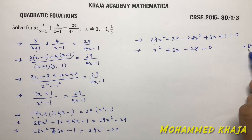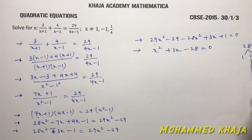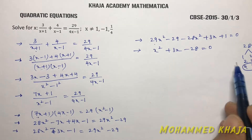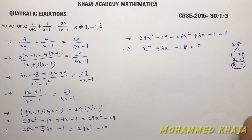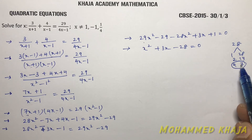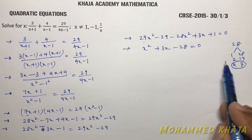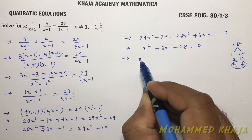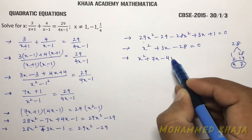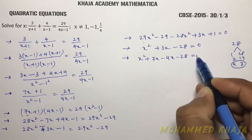To factor x² + 3x - 28 = 0, find factors of 28: 1×28, 2×14, 4×7. The pair 4 and 7 works because 7 - 4 = 3, matching the middle coefficient. So rewrite as x² + 7x - 4x - 28 = 0.